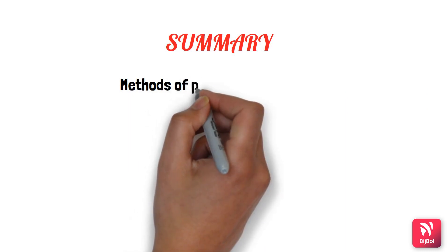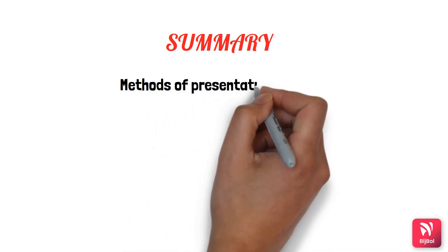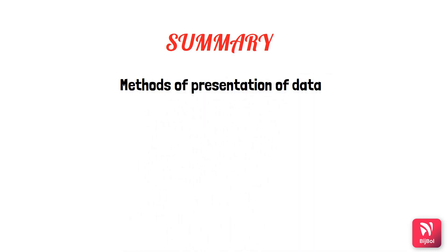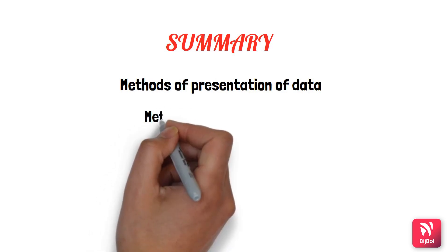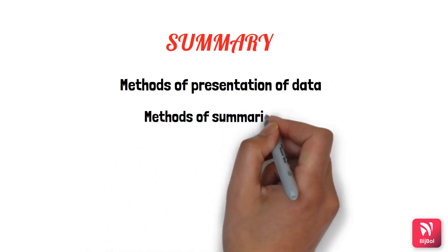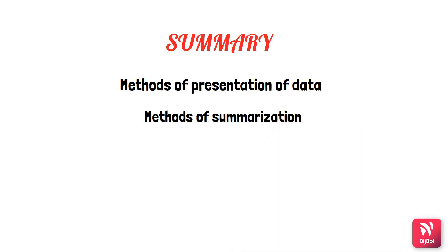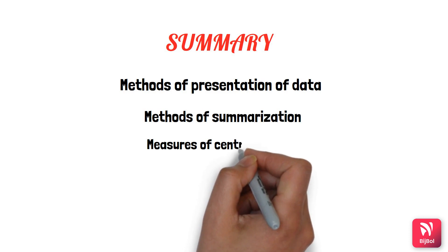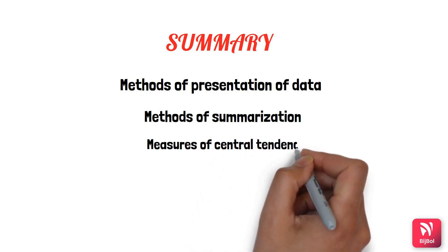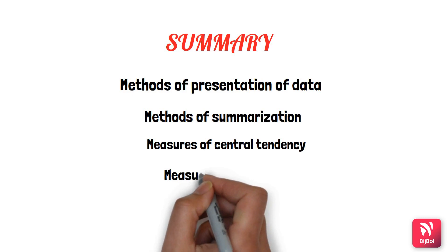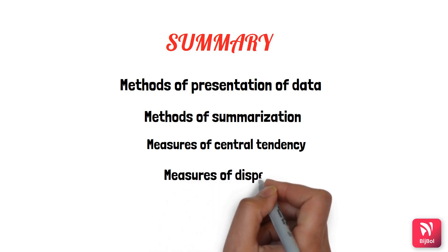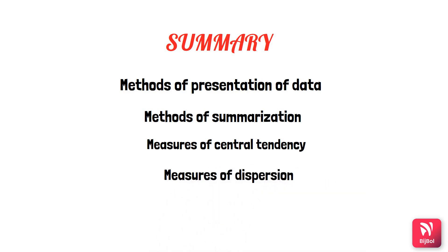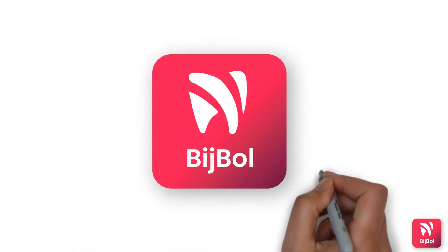In summary, after sampling we have seen the various methods of presenting data — tabular, graphical, and diagrammatic forms. Under methods of summarization, we covered measures of central tendency: mean, median, and mode. We then covered measures of dispersion, including range, mean deviation, and standard deviation.